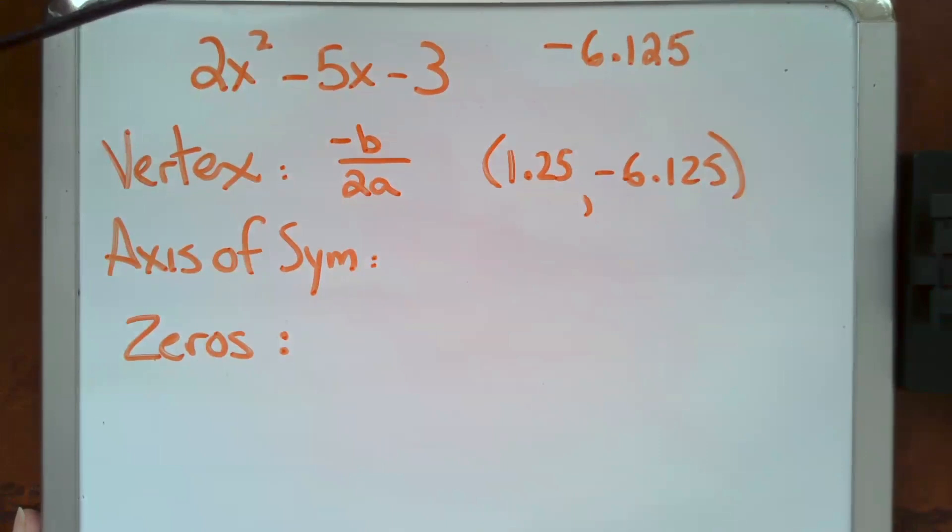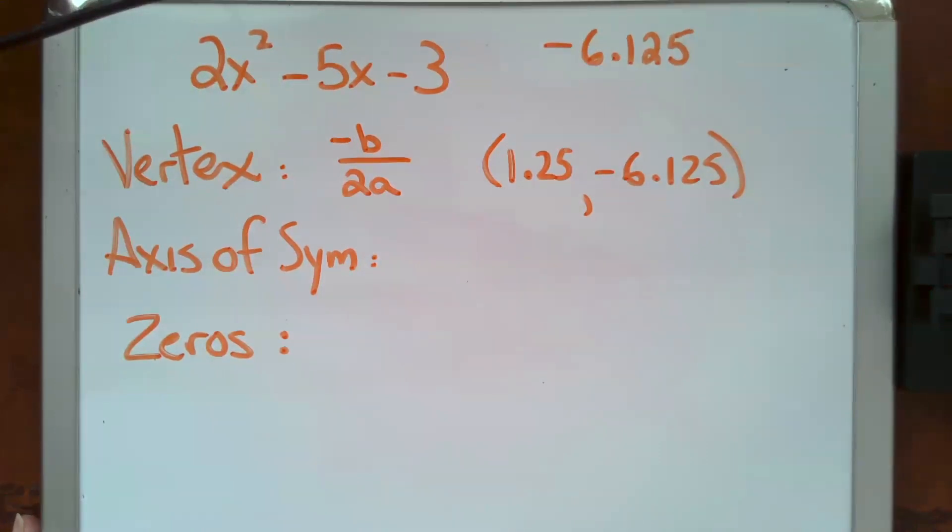Actually, let's take a moment and discuss what a vertex actually is. The vertex in a parabola is the highest or lowest point. It's the place where the parabola changes direction.